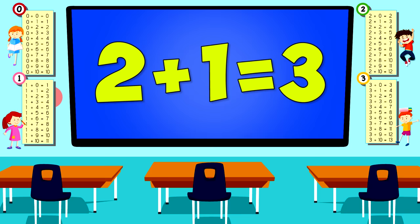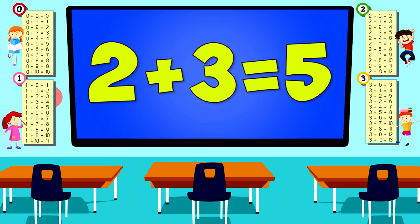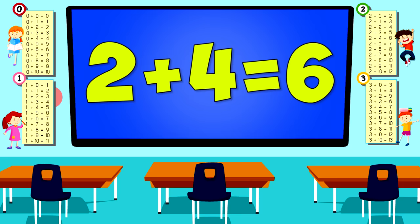2 plus 0 is 2. 2 plus 1 is 3. 2 plus 2 is 4. 2 plus 3 is 5. 2 plus 4 is 6. 2 plus 5 is 7.